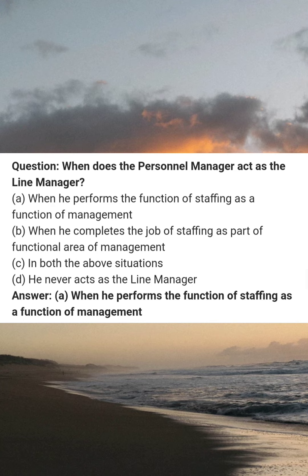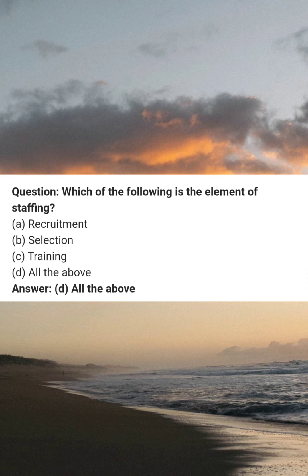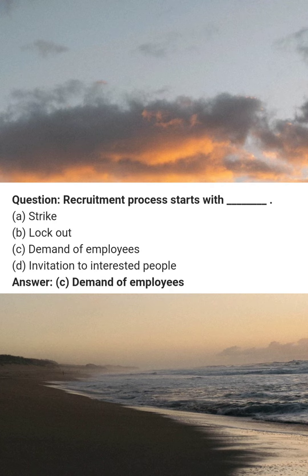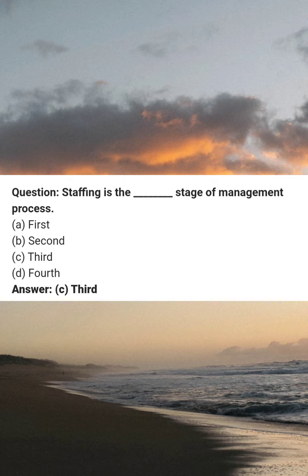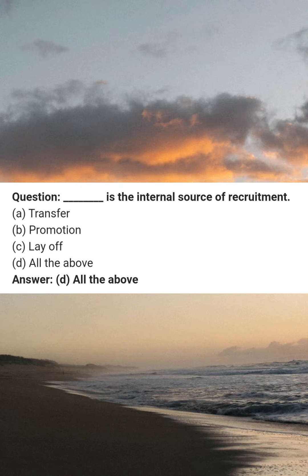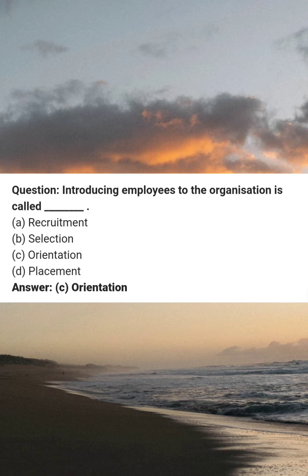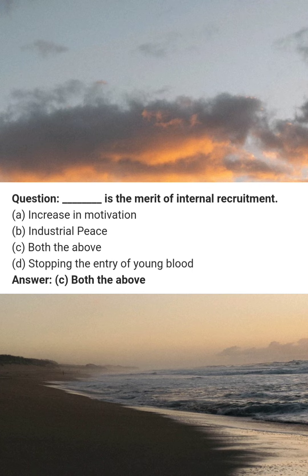When does the personal manager act as the line manager? Answer A: when he performs the function of staffing as a function of management. Which of the following is the element of staffing? Answer D: all of the above. Recruitment process starts with blank — answer C: demand of employees. Staffing is the blank stage of management process — answer C: third. Blank is the internal source of recruitment — answer D: all of the above. Introducing employees to the organization is called blank — answer C: orientation. Blank is the merit of internal recruitment — answer C: both of the above.